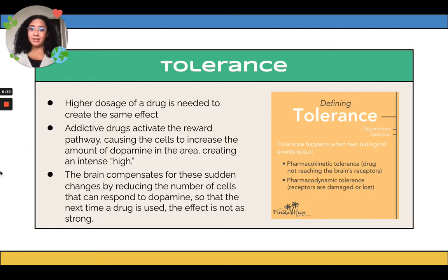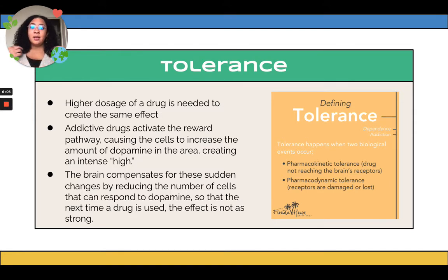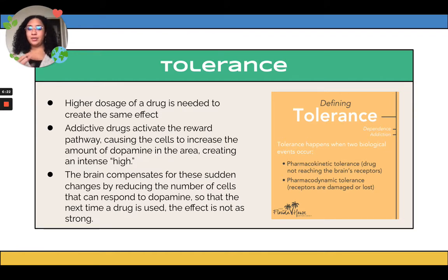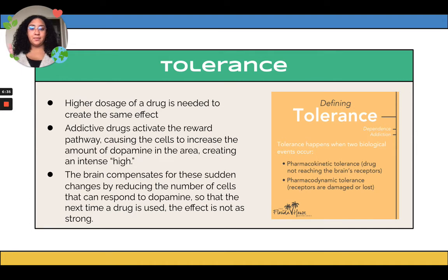Tolerance means higher doses of a drug are needed to create the same effect. These addictive drugs activate the reward pathway and release dopamine, causing the cell to increase dopamine in its area, creating a high. However, the brain compensates by reducing the number of cells that respond to dopamine, so the next time the drug is used, the effect is not as strong — meaning you feel you need more of that substance to create the same high.